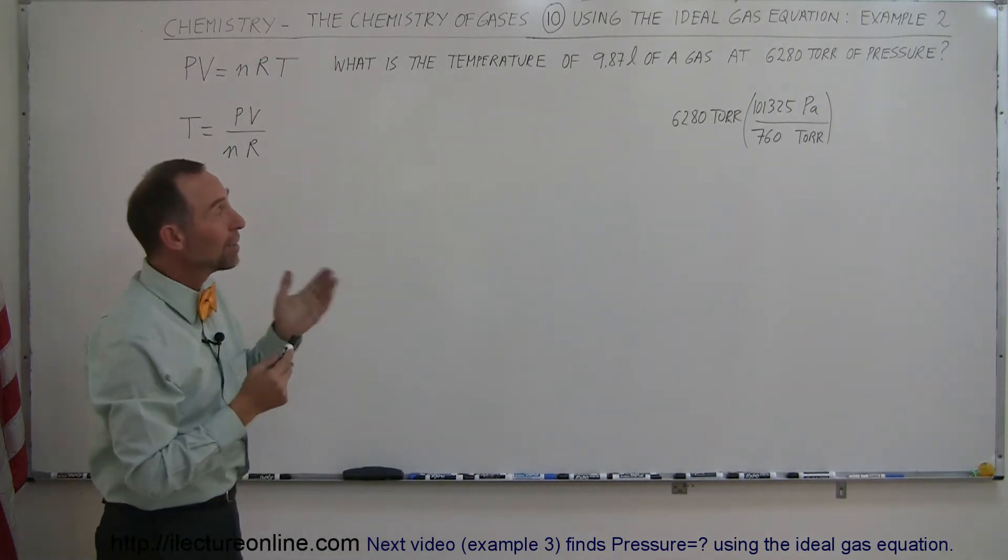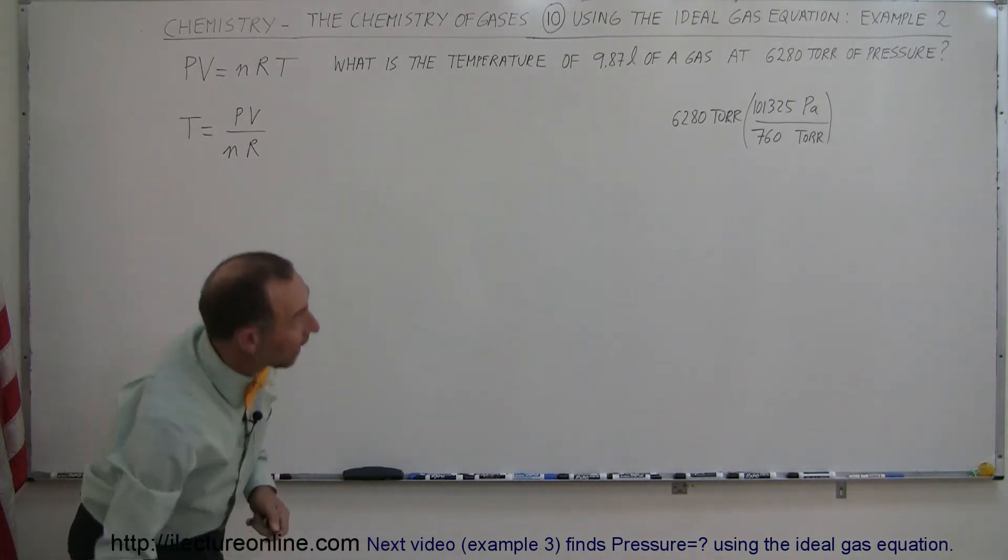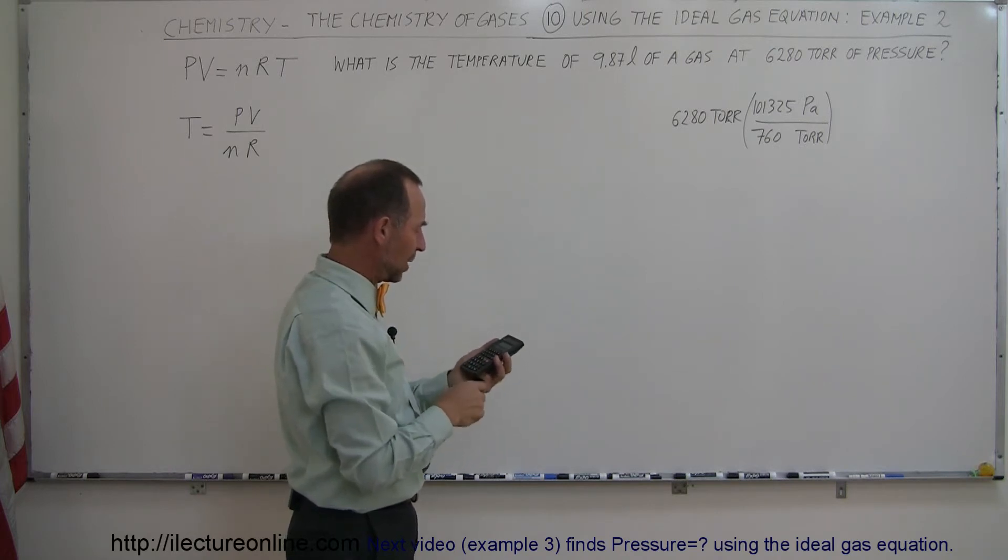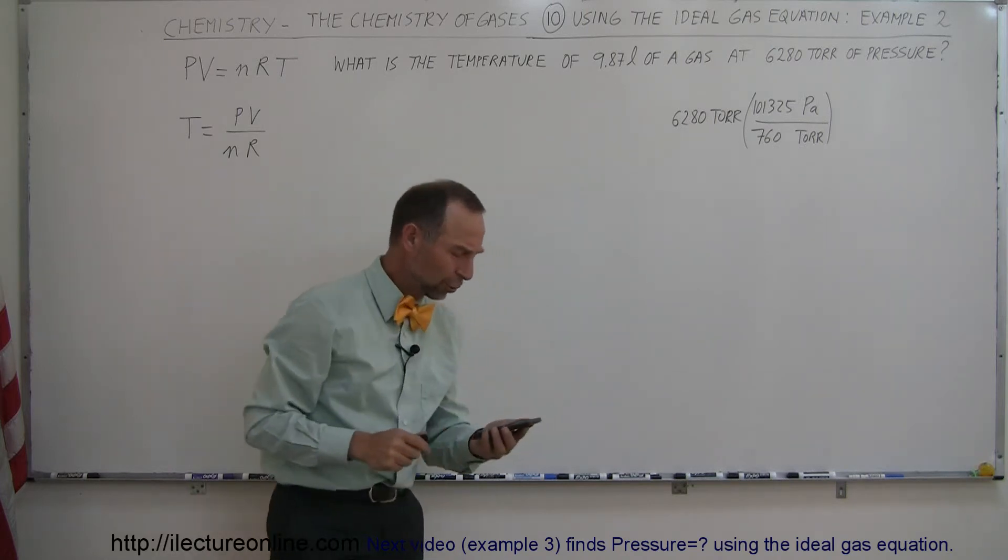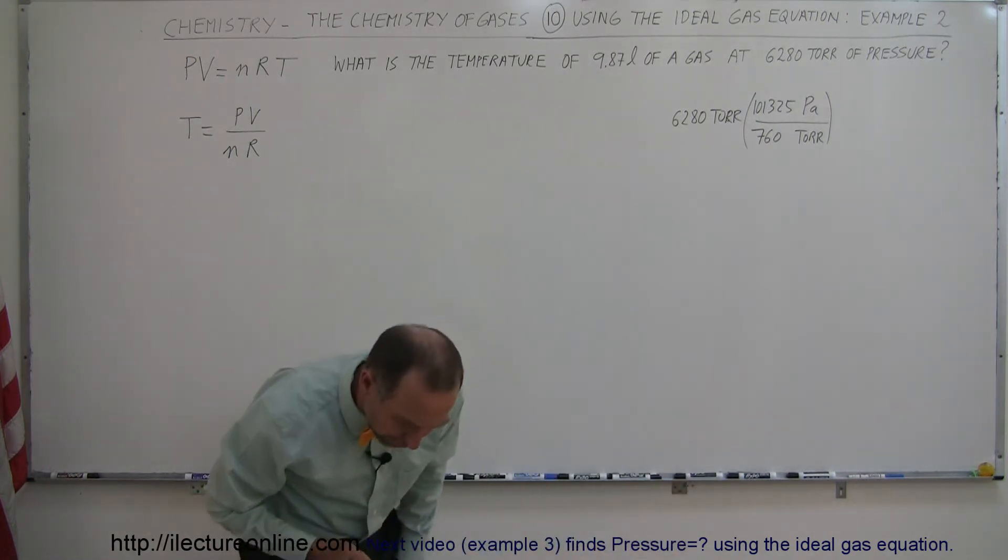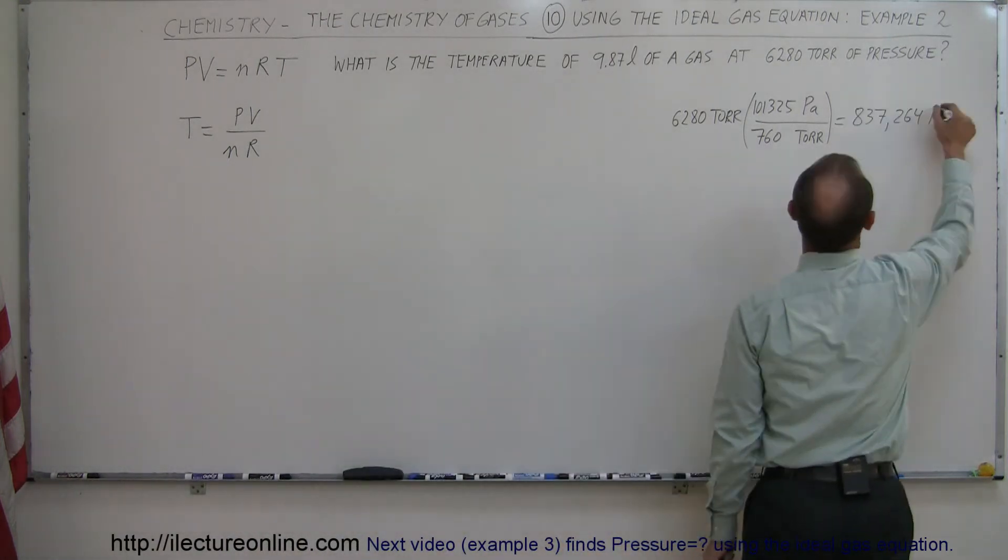That stands for millimeters of mercury. And so now we take 6,280, multiply times 101,325, and divide by 760, and we have 836,264, or 837,264 Pascals.